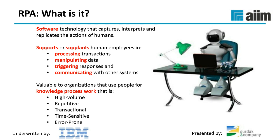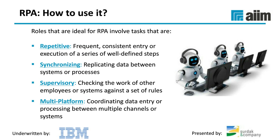How do you use RPA? As I mentioned, highly repetitive process steps where we're trying to keep systems synchronized but don't have them integrated on the back end so they're not doing data feeds automatically. Synchronization steps make sure all systems have the latest data and you can change the speed of that synchronization. Supervisory — making sure people are entering data correctly or systems are being updated correctly; a robot can do that much more effectively, accurately, and error-free. And then multi-platform: despite decades of trying to integrate systems, RPA is a way of achieving a degree of synchronization between systems without spending a fortune trying to integrate them on the back end.